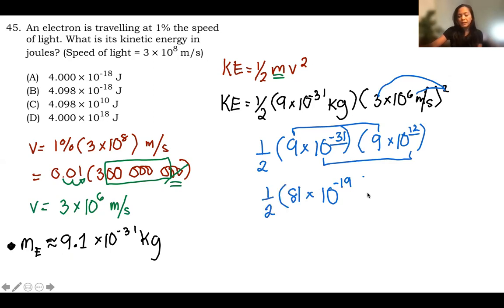Now let's look at the choices. Definitely, this is not an answer. This is not an answer. So we are left with A and B, both have 10 to the negative 18. And then 4, exactly 4 and 4 with the decimal values.